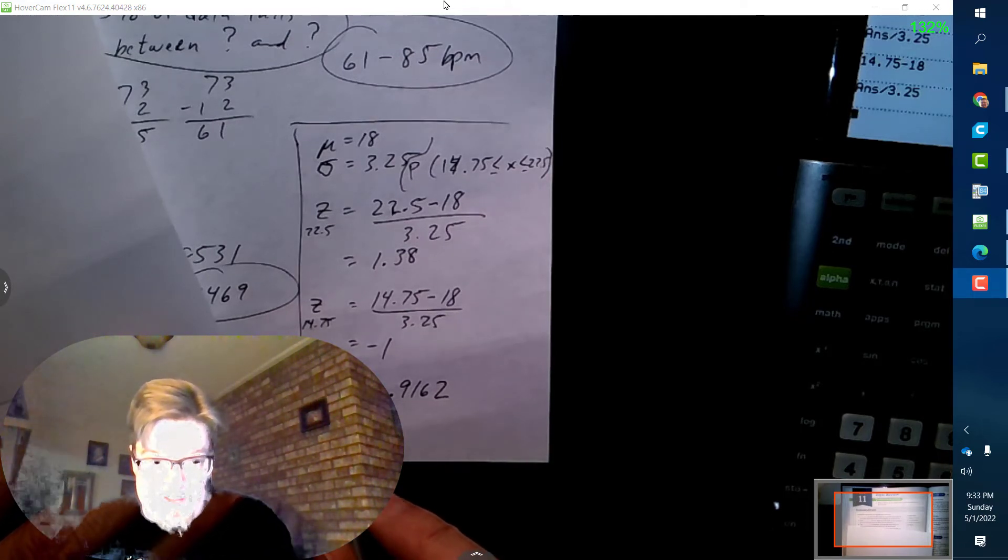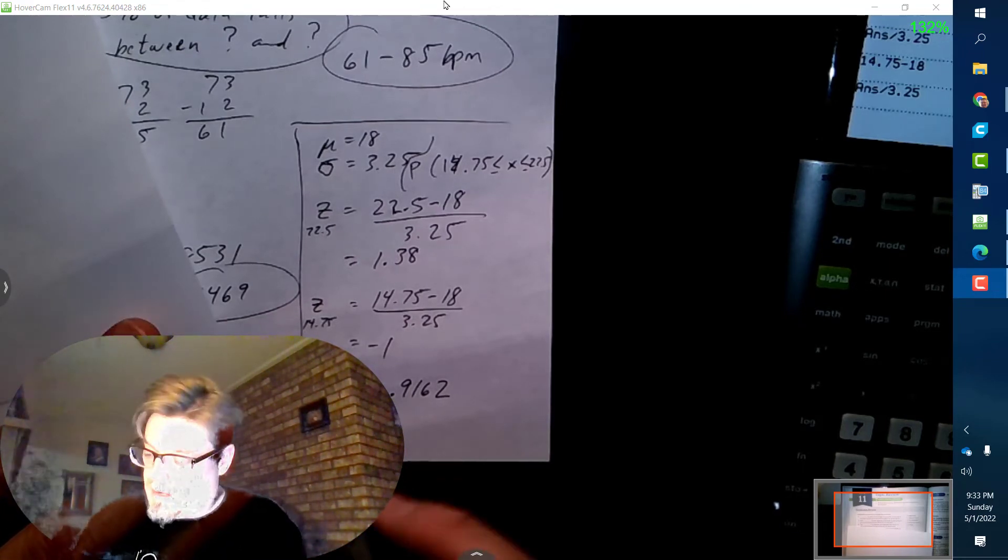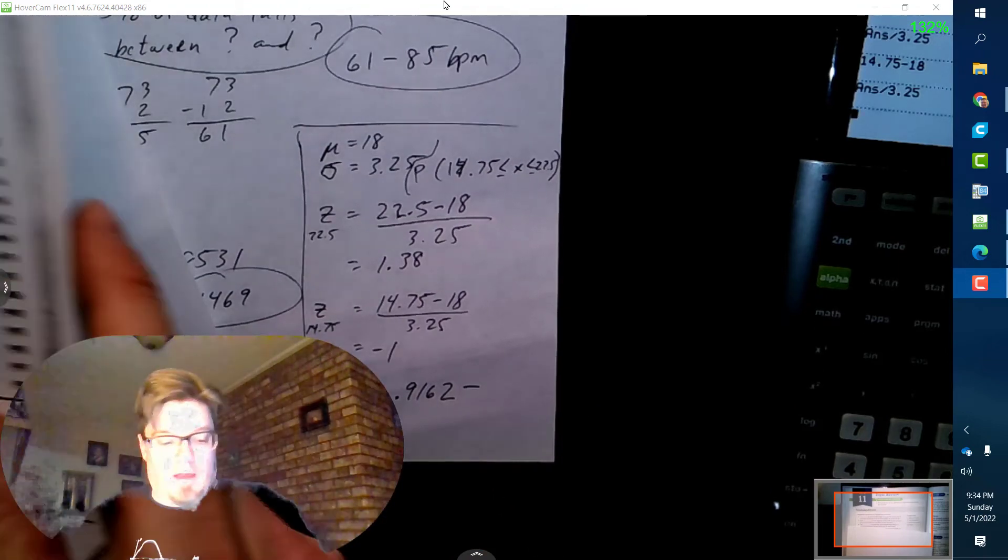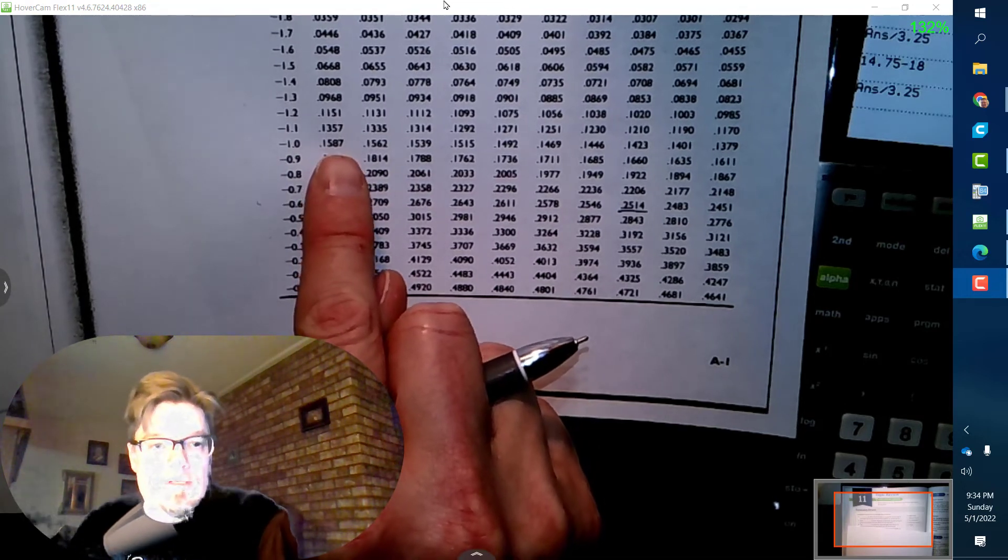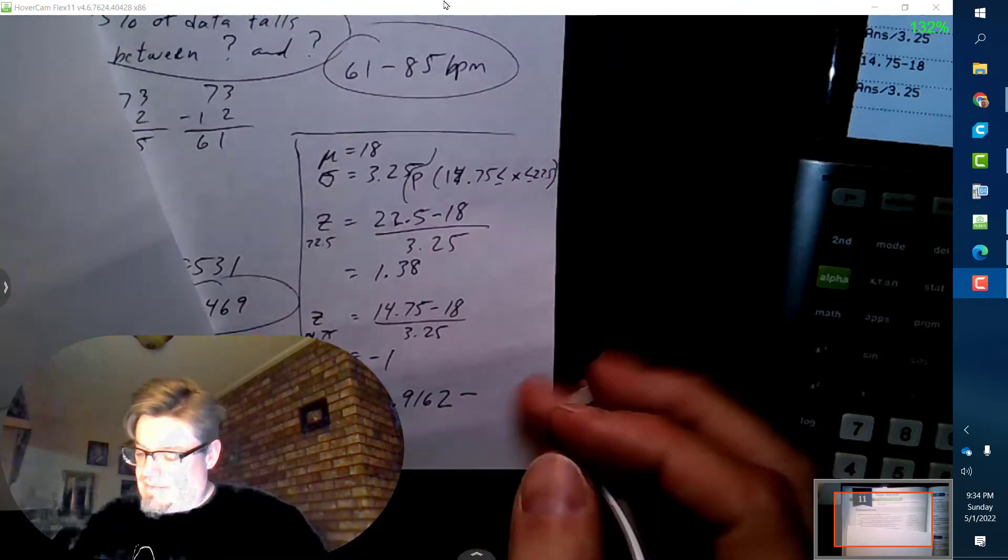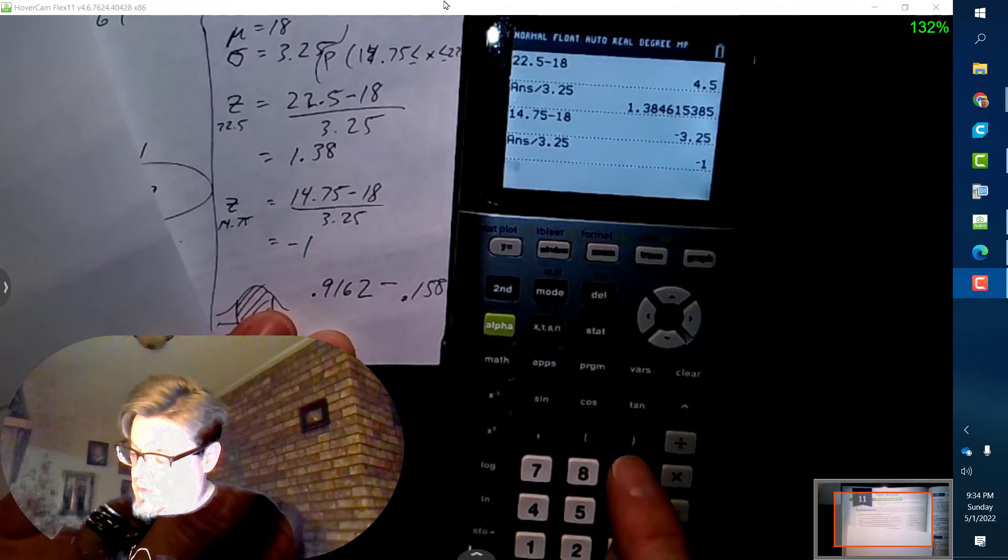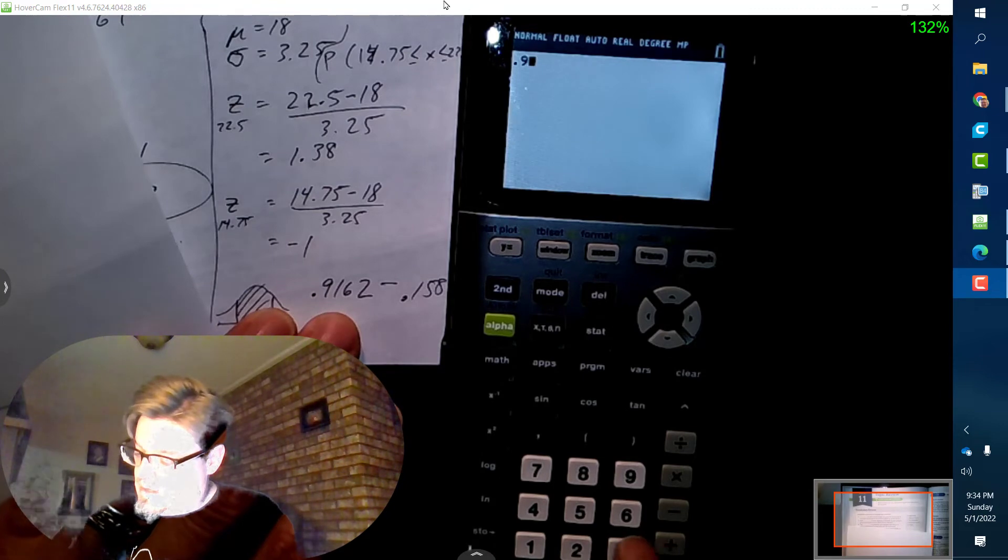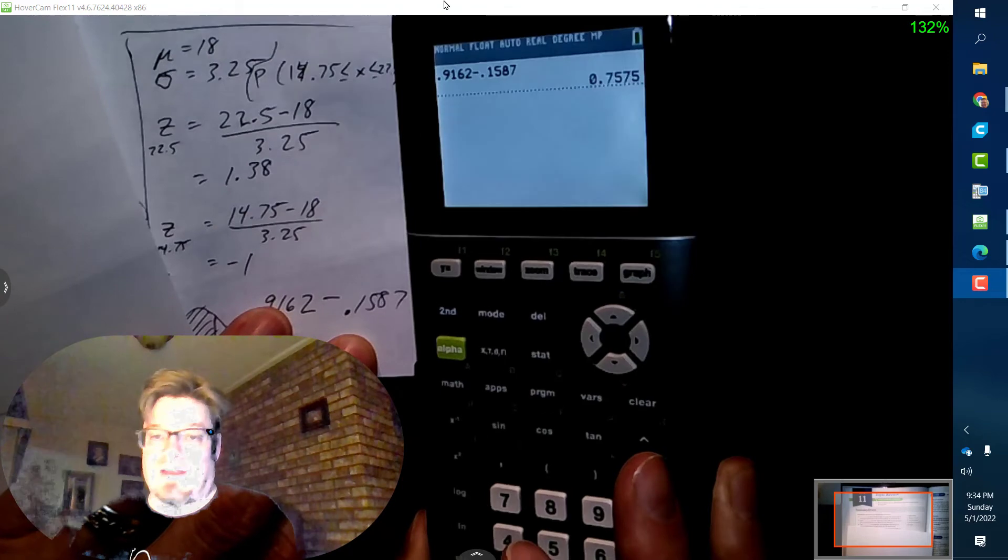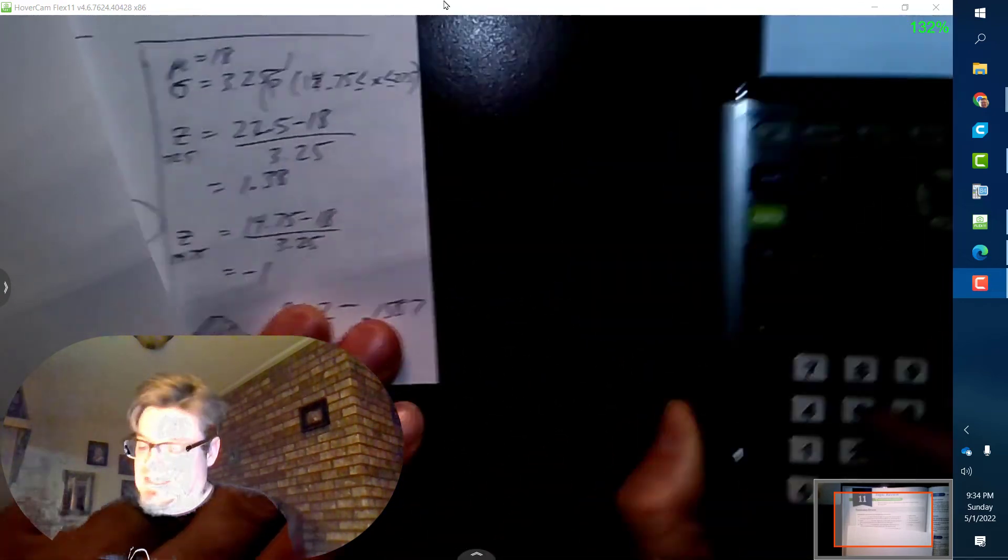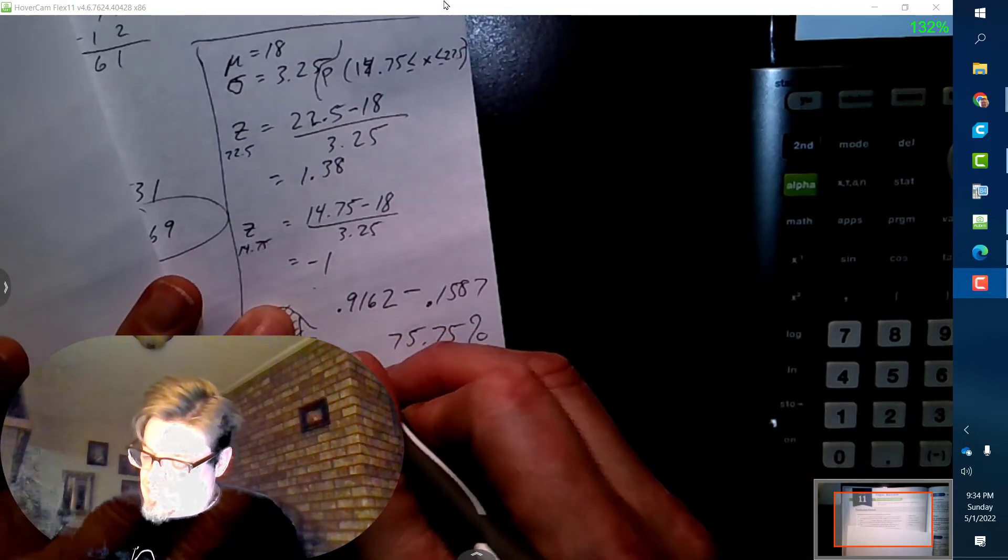So now I look at negative 1.0 - what does it mean to have negative 1.0 standard deviations? It is 0.1587. Subtract those two: 0.9162 minus 0.1587, I've got 75.75 percent.